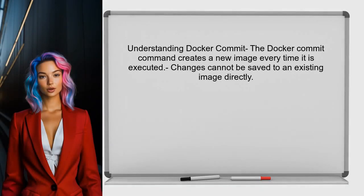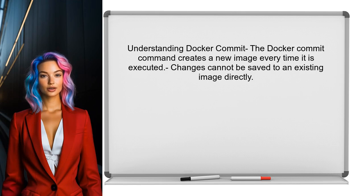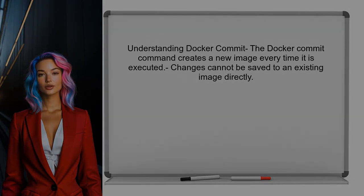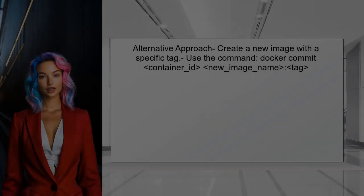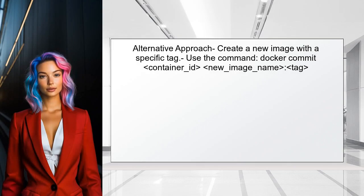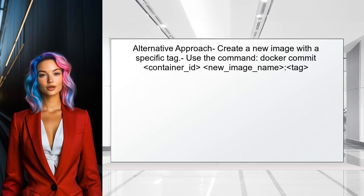To address the user's question, it's important to understand that the Docker commit command always creates a new image. There is no direct way to save changes to an existing image from a running container using the commit command. However, the user can achieve a similar effect by using a different approach — instead of committing changes to the existing image, the user can create a new image with a specific tag that reflects the changes made.